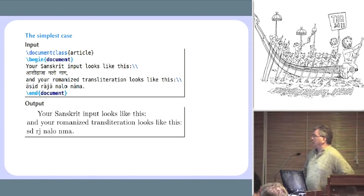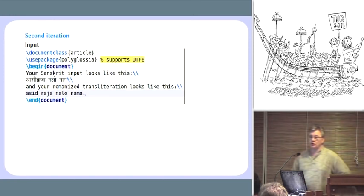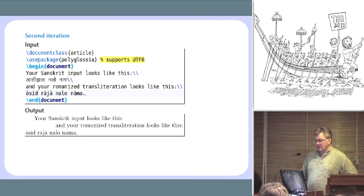So XeTeX is typesetting my work, that's good, but it's not understanding Unicode. So the very first thing is to tell it to support Unicode, which is done through calling Polyglossia, which itself calls FontSpec, which calls various Unicode packages. So now, same file, no change at all, and there's the output. And your Romanized transliteration looks like this, and we've got our Romanized accents, but we have no Devanagari. Why not?